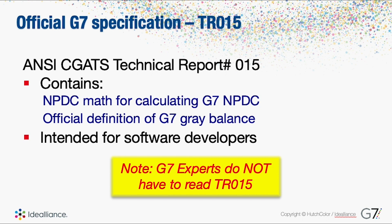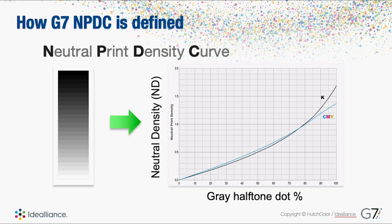One thing we want to definitely show you is that there are essentially two NPDC curves. One is for the black and you can see there on the left the grayscale zero to 100 percent for black.